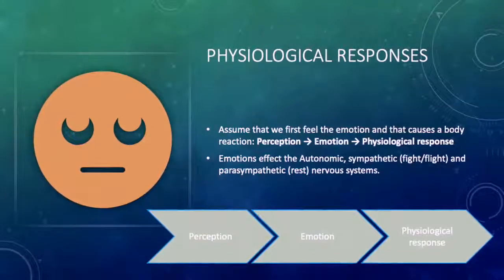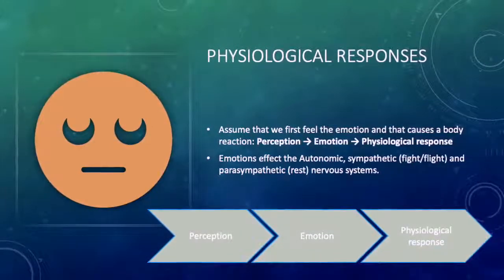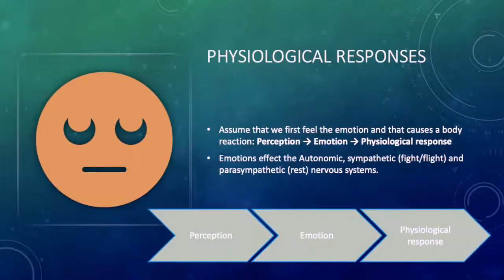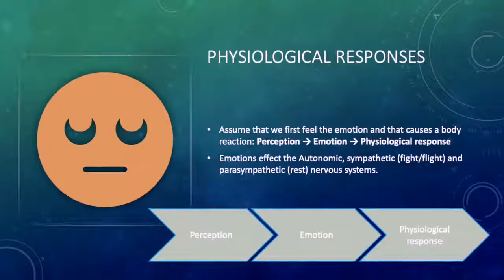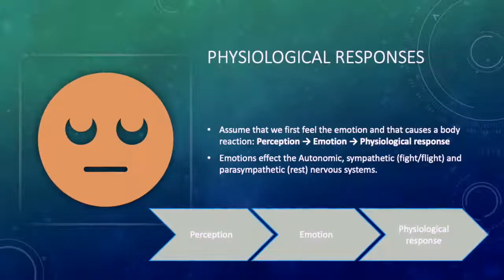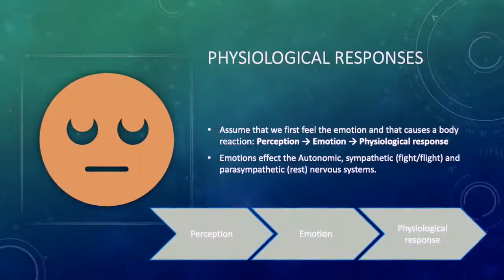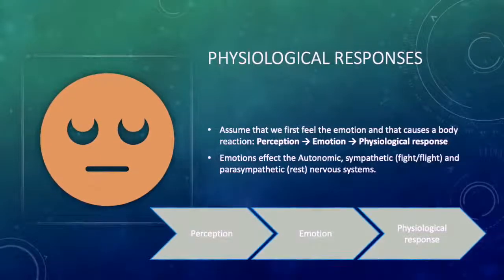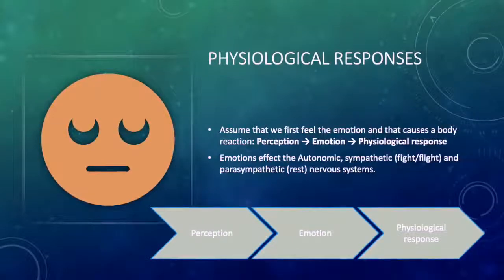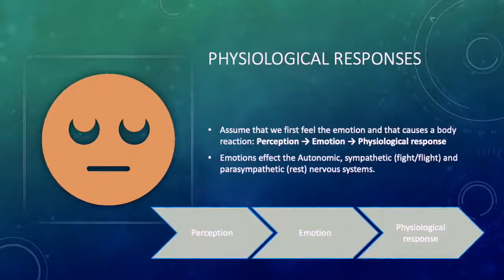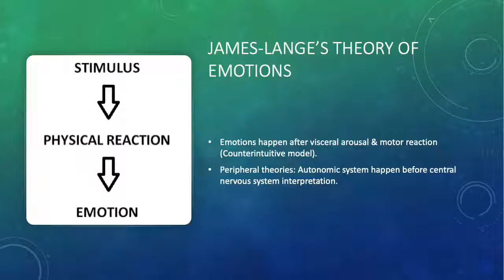Emotions affect the autonomic, sympathetic, and parasympathetic nervous system. The sympathetic nervous system controls fight and flight, and the parasympathetic controls rest.